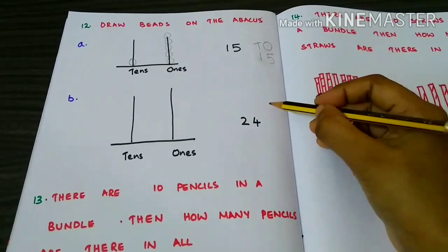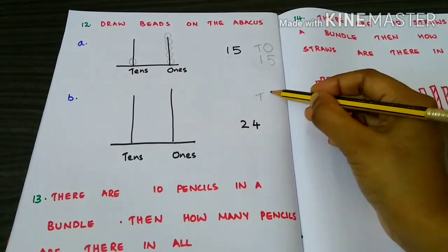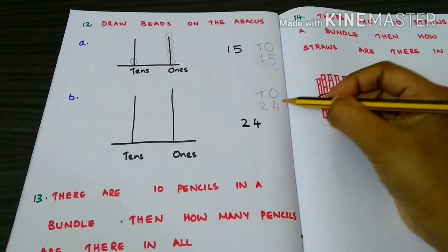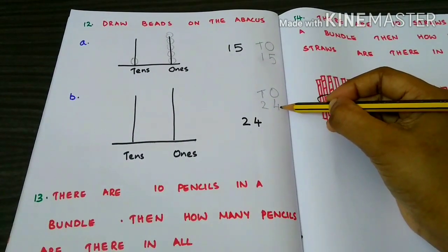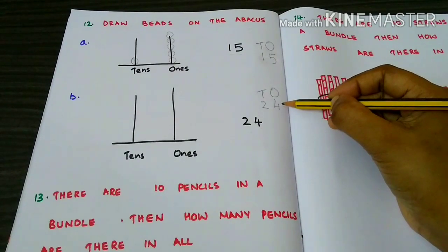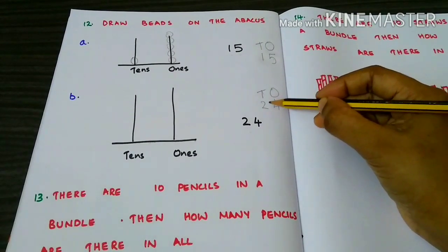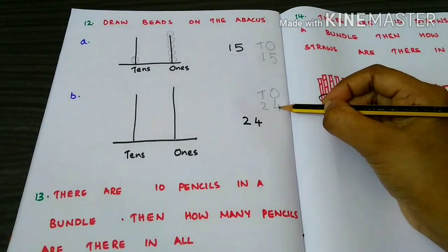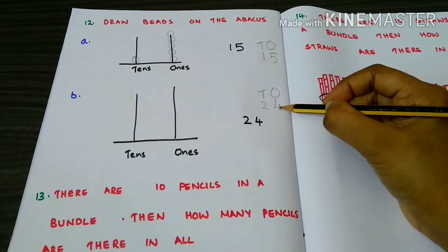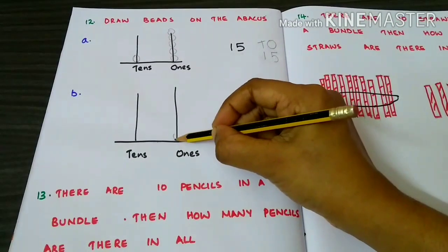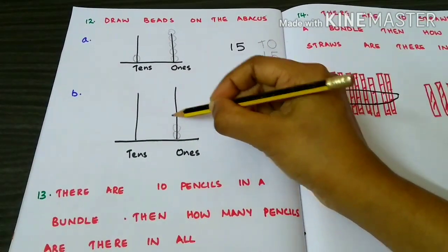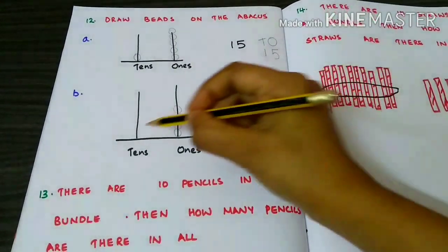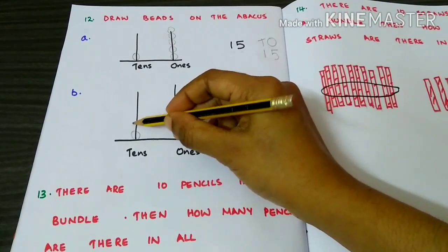Twenty-four. Twenty-four has four on the ones place and two on the tens place. So we have to draw four beads on the ones place — one, two, three, four — and two beads on the tens place — one, two.